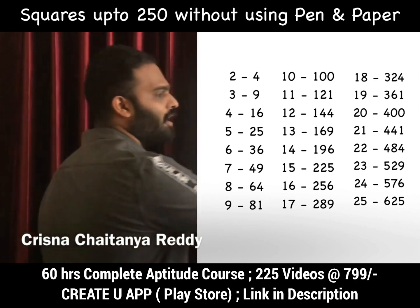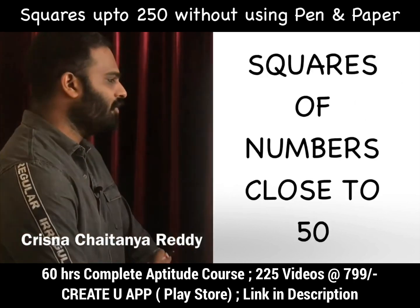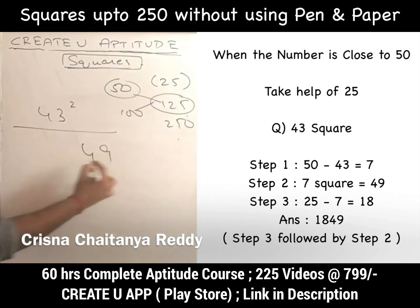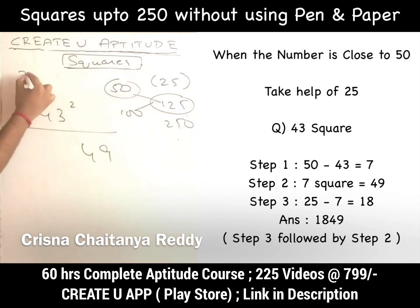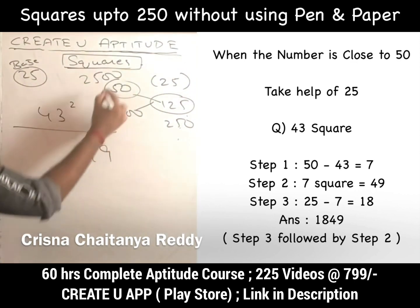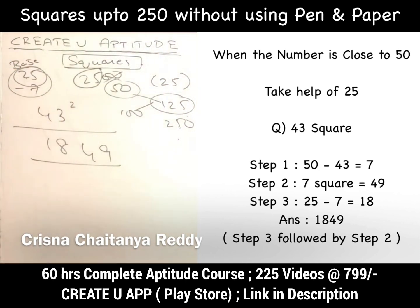For any number till 125, realize whether it is close to 50 or close to 100. For example, 43² — this is close to 50, specifically 7 less than 50. So 7² = 49; write 49 as the right part. Since it is 7 less than 50, subtract 7 from 25: 25 − 7 = 18. So the answer is 1849.